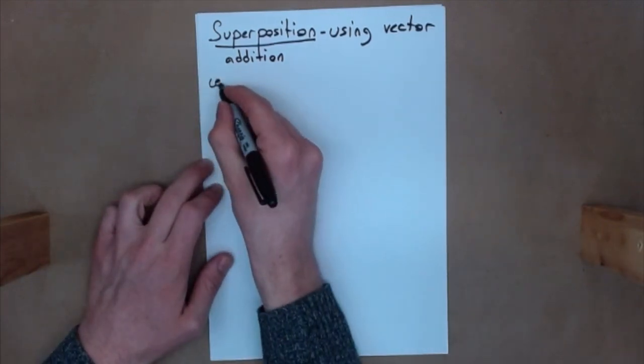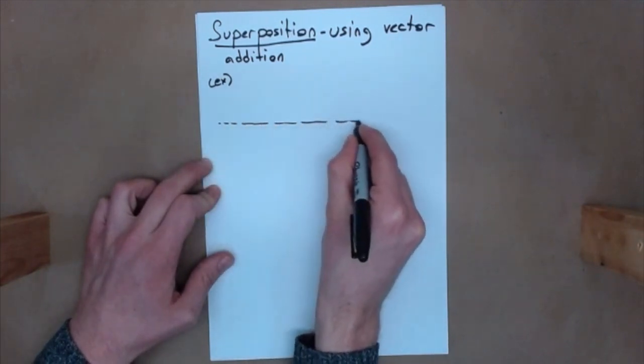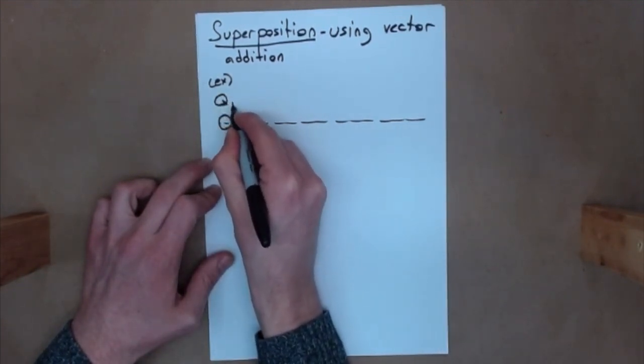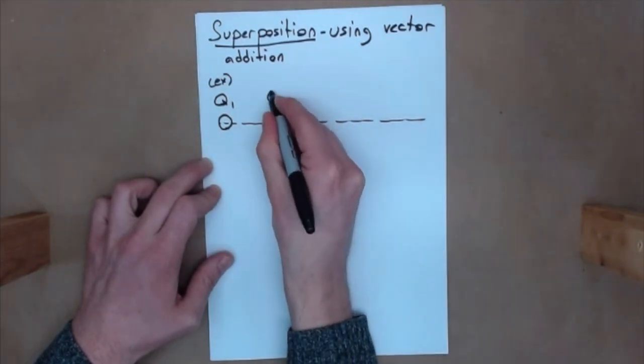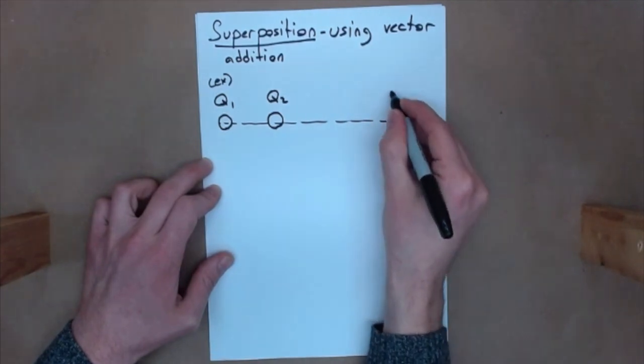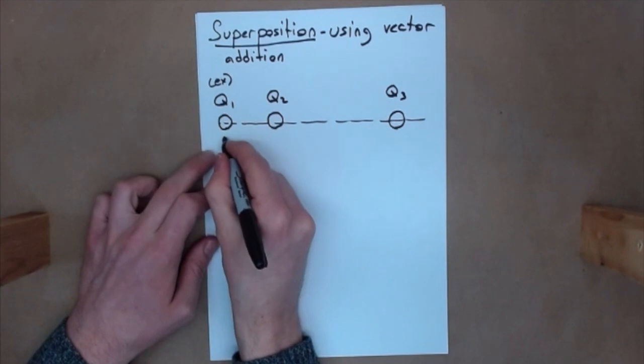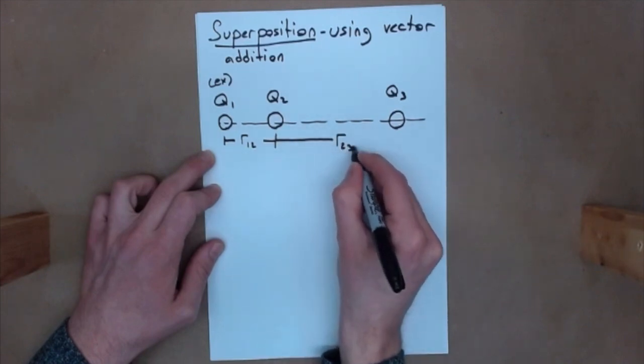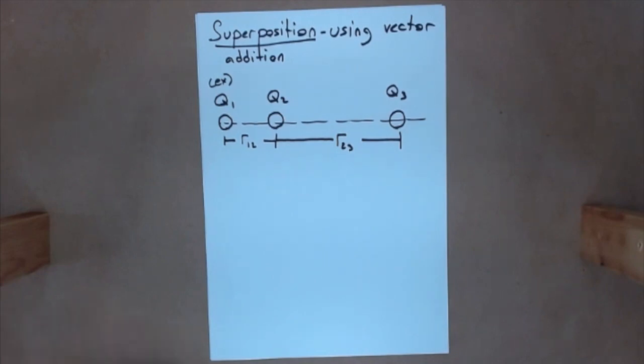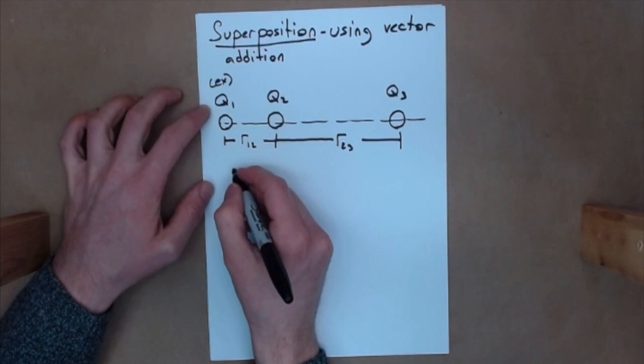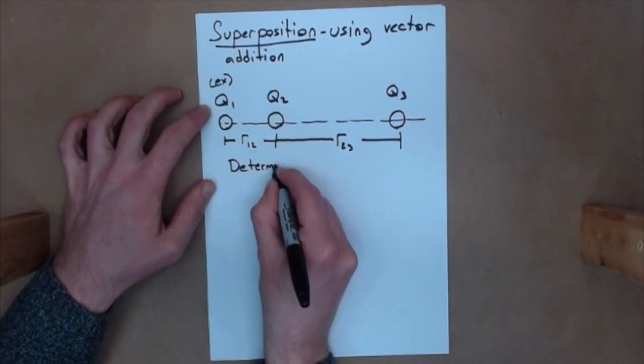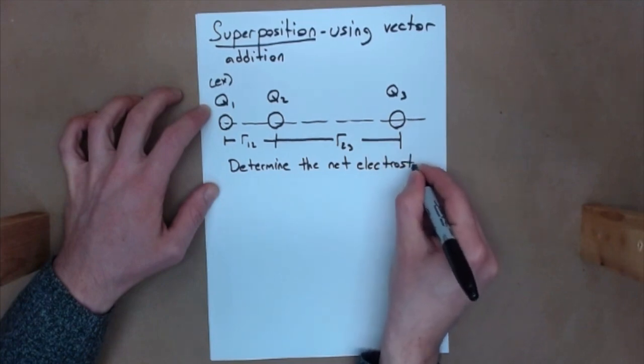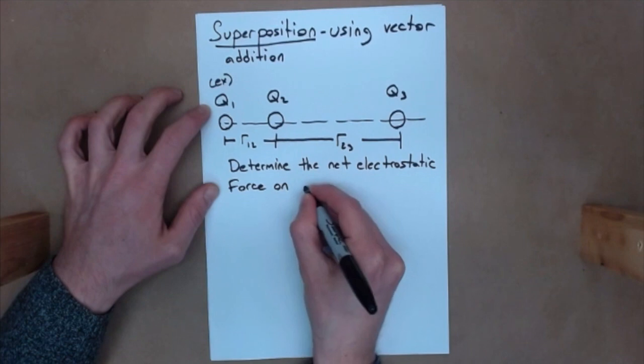So, suppose that we have an example, okay? And in this example, we're looking at a horizontal line, and on this horizontal line exists three charges. We have here a charge, which I'll call capital Q1. Here, I have a charge, which I'll call capital Q2. And here, I have a charge that I'll call capital Q3. And then I'm going to say that Q1 lies a distance of R12 away from 2, and 2 lies a distance of R23 away from 3. Well, suppose that the question is asked to us, we're asked to determine the net electrostatic force on Q2.